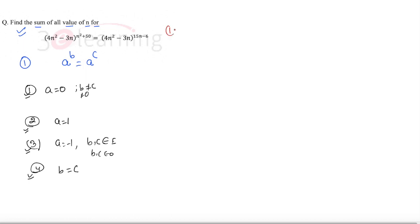We are working on case number one: we have 4n² - 3n = 0. Take n common, we have n(4n - 3) = 0. It means n is either 0 or n is 3/4. But check if n = 0 and 3/4 make power zero or not.